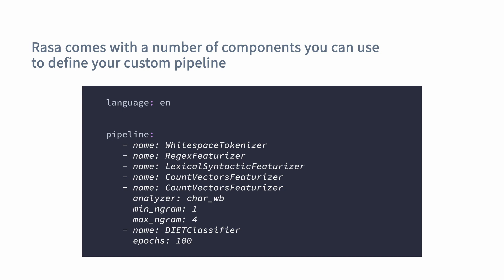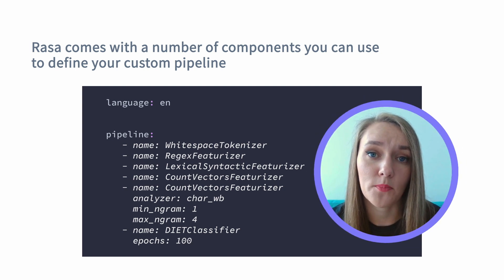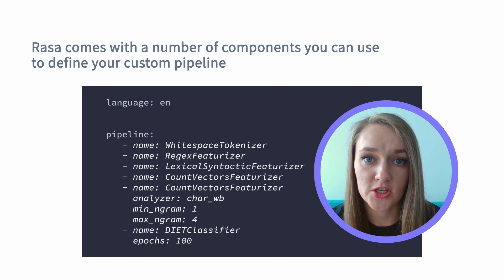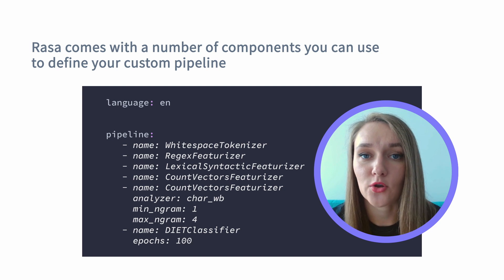Rasa open source comes with a number of different components that you can use to build your own custom pipelines. Which components you use will highly depend on what kind of problem you are trying to tackle and what kind of information you would like your assistant to extract from user inputs. We will do a high-level overview of the components, but to learn all the details and configurations for specific components, make sure to check out the Rasa documentation.